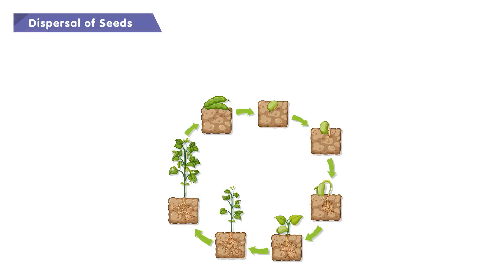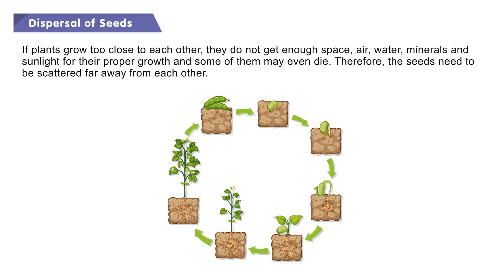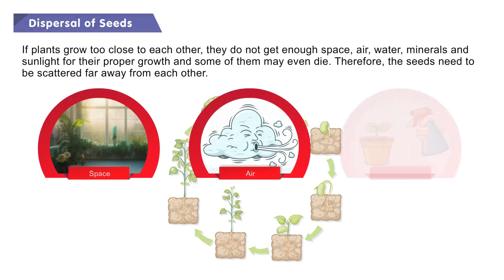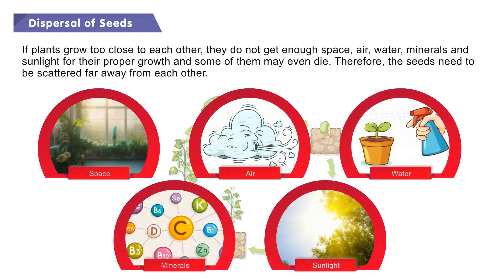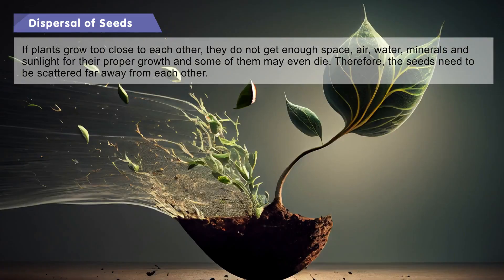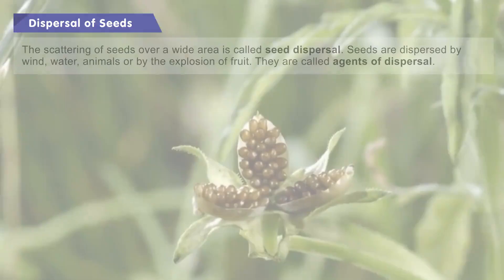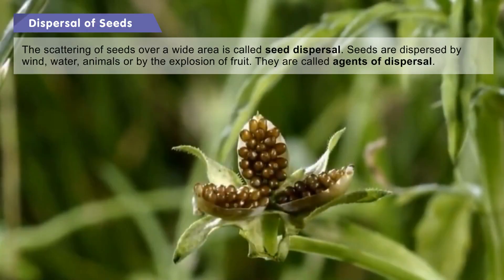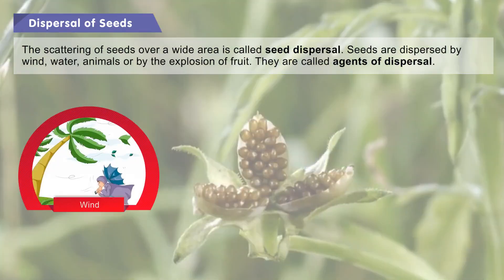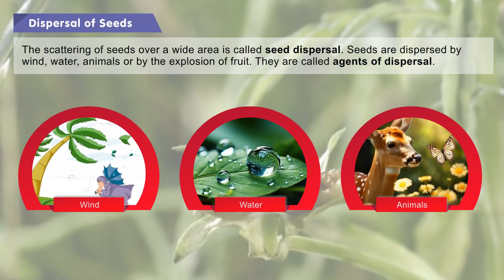Dispersal of seeds: If plants grow too close to each other, they do not get enough space, air, water, minerals, and sunlight for their proper growth, and some of them may even die. Therefore, seeds need to be scattered far away from each other. The scattering of seeds over a wide area is called seed dispersal. Seeds are dispersed by wind, water, animals, or by the explosion of fruit. These are called agents of dispersal.